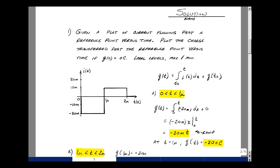In problem number one, you were given a plot of current flowing past a reference point versus time, as shown here, and you're asked to plot the charge transferred past this reference point versus time if you had a zero initial condition on the charge. Also, could you label levels, including maximums and minimums? In chapter one, we found a relationship between charge and current, and we found that current was equal to the change in charge per unit time, or it could also be solved that the integral of the current plus the initial condition was the value of charge.